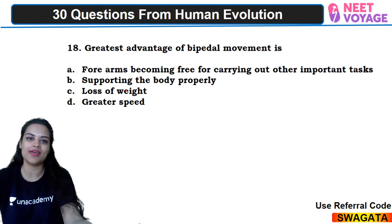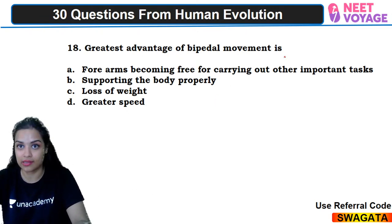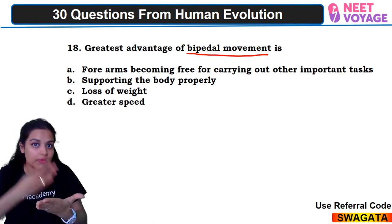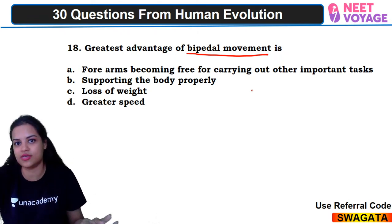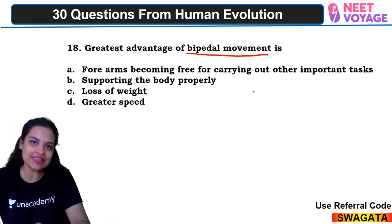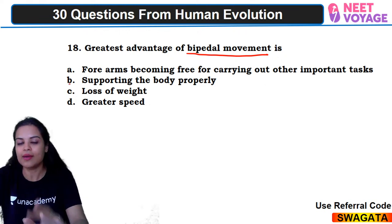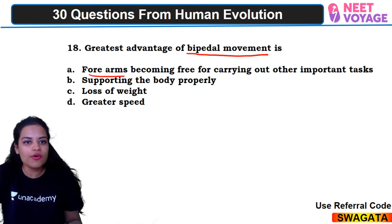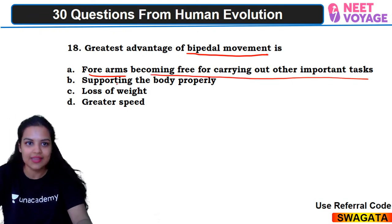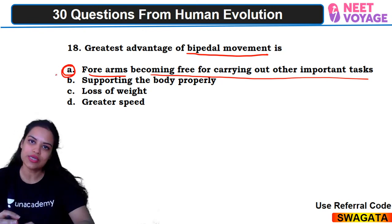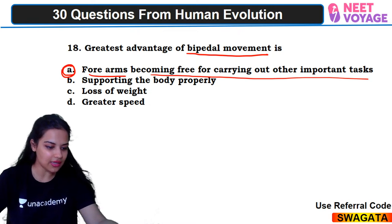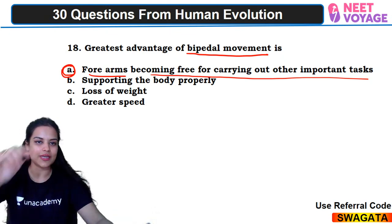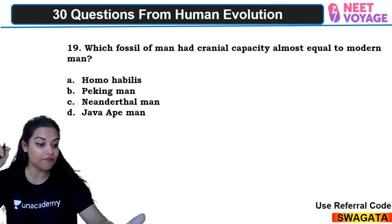Eighteenth question: the greatest advantage of bipedal movement is what? When you walk on two legs, your two forelimbs become free to carry out other important tasks. So four arms becoming free for carrying out other important tasks is the advantage. Chandrasekhar, Ram Prasad, and Divyansh answered correctly.